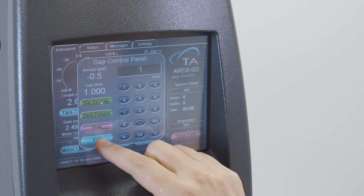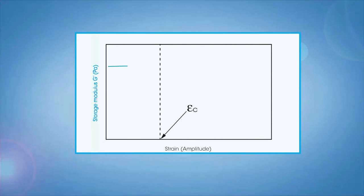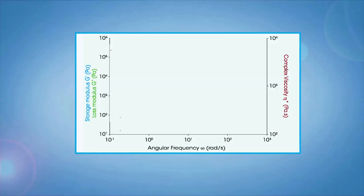Typical melt rheology test procedures include an amplitude sweep to determine the linear viscoelastic region, a time sweep to evaluate thermal process stability, and a frequency sweep to measure viscoelastic properties and calculate molecular weight and molecular weight distribution.